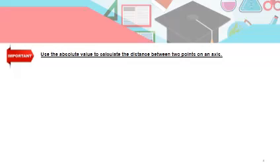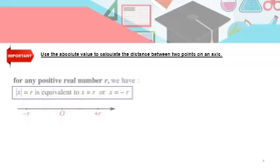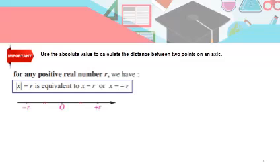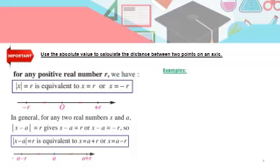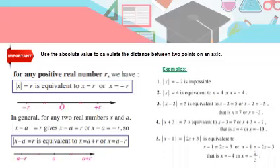We use the absolute value to calculate the distance between two points. If absolute of x equals r, then x equals r or x equals minus r. The first thing you do is isolate the absolute value alone equal to a number, then take two cases. For example, if absolute of x equals 4, then x equals 4 or x equals minus 4. But if absolute of x equals minus 2, that's impossible because an absolute value cannot be negative. Always remember: the first case takes the same number, the second case takes the opposite.